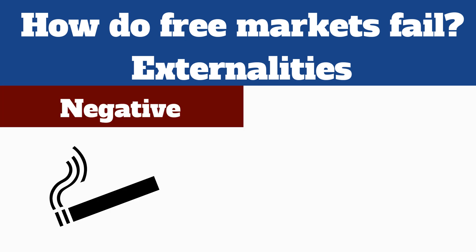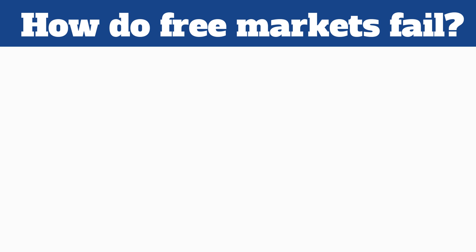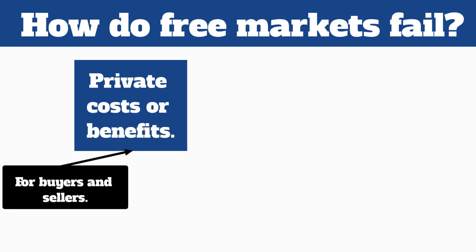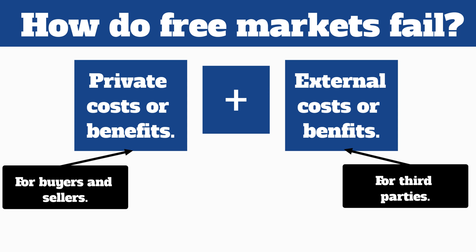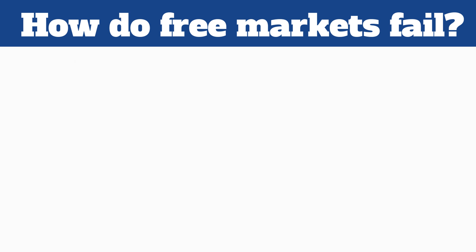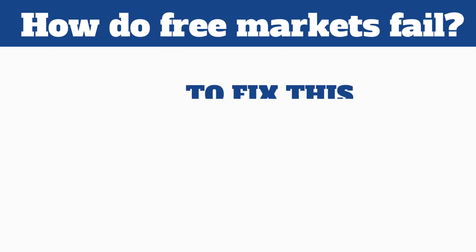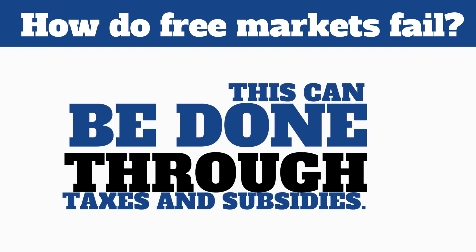Smoking may have many negative externalities, but education, for example, has many positive externalities. So in a completely free market scenario for education, people wouldn't take into account these external effects and not enough people would pay for education. The costs and benefits to buyers and sellers are known as the private costs and private benefits. If you add the externalities to these, you get what's known as the social cost and social benefits. If you want the best outcome for society, you have to produce not at the market price and quantity, but at the socially optimal price and quantity, by taking into account the third-party effects. To do this, you have to add the externalities into the market so that buyers and sellers will take them into account when producing and consuming.